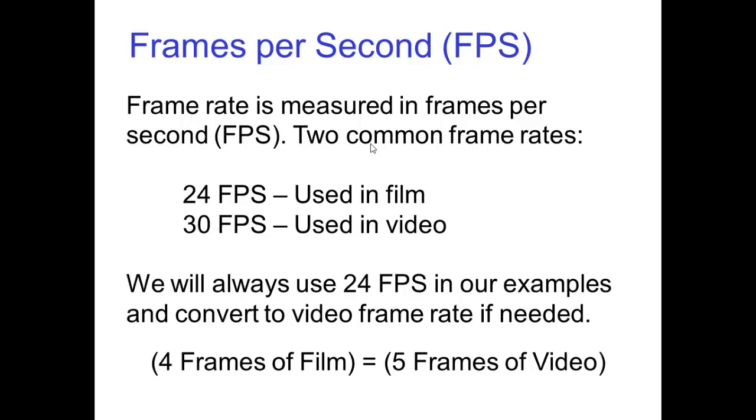Frame rate is measured in frames per second, or FPS. And two common frame rates are 24 FPS, used in film, and 30 FPS, which is used in video. We'll always use 24 FPS in our examples, and you can easily convert to the video frame rate if you need to.